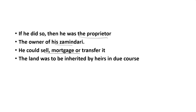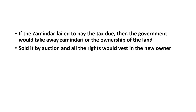After a Zamindar's death, his heirs used to inherit the Zamindari land. But if the Zamindar failed to collect land tax from the peasants and pay to the British, his Zamindari rights would be taken away. He would lose ownership of the land, and the land would be sold in public auction to the highest bidder.